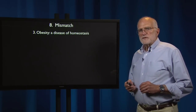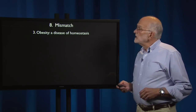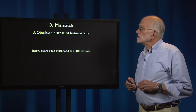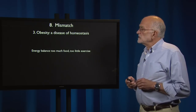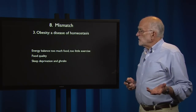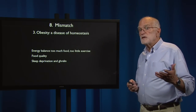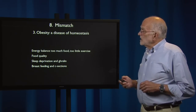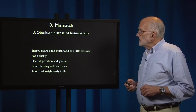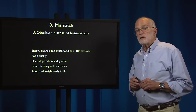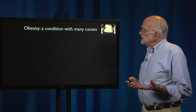One of the major diseases of mismatch is obesity, which, as we've seen earlier when we discussed what is a disease, is a disease of homeostasis. It results from too much food and too little exercise, but it also has to do with food quality, sleep deprivation, and the role that ghrelin — a hormone — plays in mediating the effects of sleep deprivation. There are effects of breastfeeding and of c-sections on the risk of obesity, and having an abnormal weight early in life can change the risk of obesity as an adult. So it's a condition that has many causes.